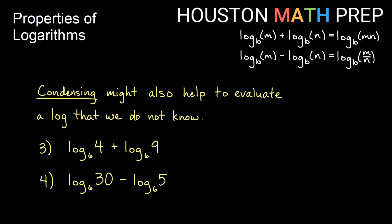Condensing can also help us evaluate a log we can't figure out. For log base 6 of 4 plus log base 6 of 9 — neither 4 nor 9 are common powers of 6 — but if we use the product rule and multiply 4 and 9 together, it becomes log base 6 of 36. That asks: what power of 6 is 36? The answer is 2, because 6 squared is 36.